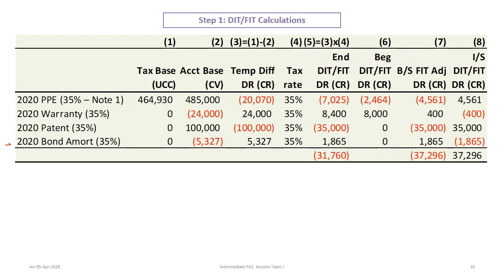The last item relates to bond amortization. The amount actually paid in cash for bond interest is fully deductible, so there's no tax basis, but we have a difference of $5,327 relating to bond interest expense based on the effective interest rate approach — the difference between interest paid of $55,000 and interest expense of $60,327 is $5,327 amortization of the bond premium or discount. Zero minus negative $5,327 gives a positive debit, representing future deductibility, so times 35% equals $1,865.